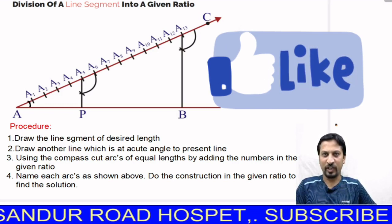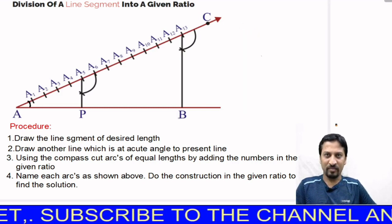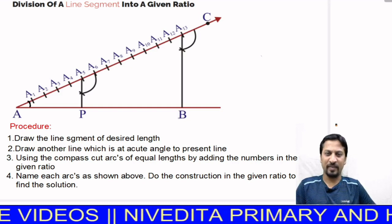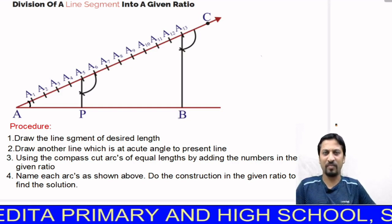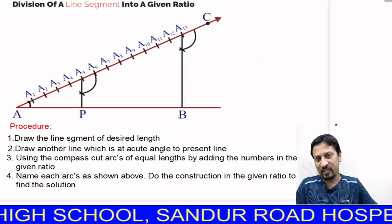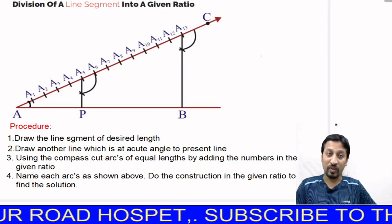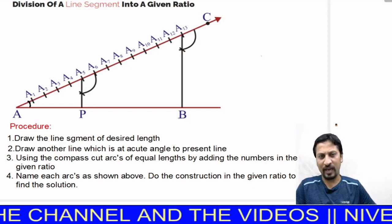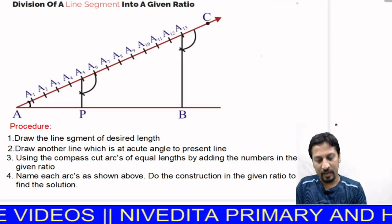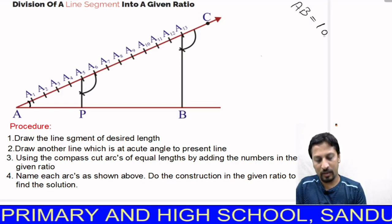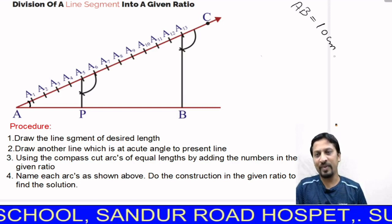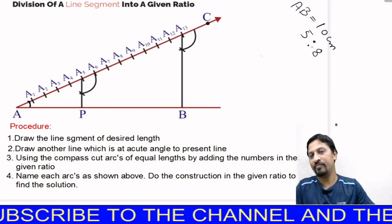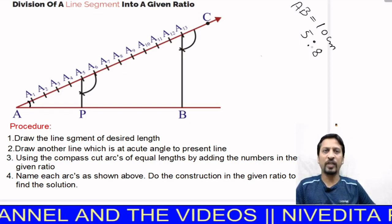As you can see in the diagram on your screen, there is a line with three points A, P, and B, and one more line AC making a particular angle with line AB. I will give a brief explanation here because next we will see how to construct such problems. The problem says you have to draw a line AB of 10 centimeters and divide it in the ratio 5 is to 8.